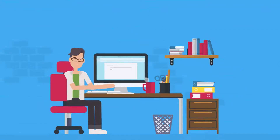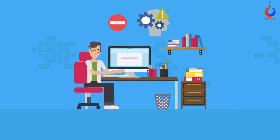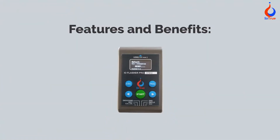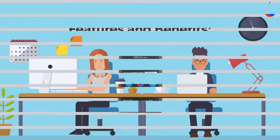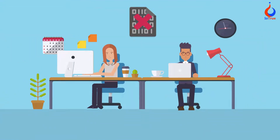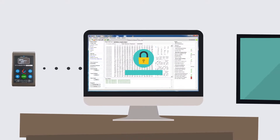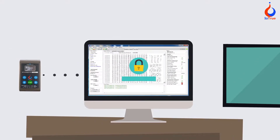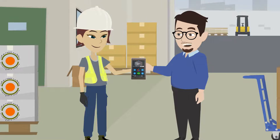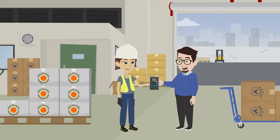This helps to eliminate the possibility of human mistake during device programming. You don't need to share your code or hex file with the production house. You can store your code inside the programmer in password-protected encrypted format with the help of PC GUI. You can share this programmer with your production house.